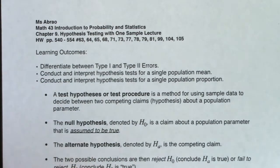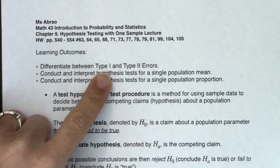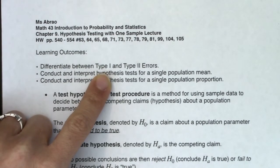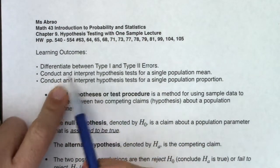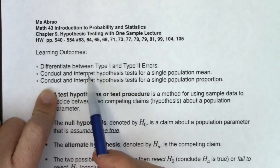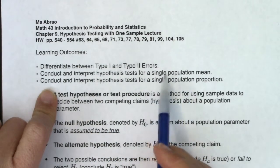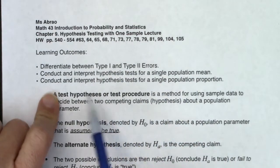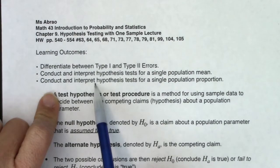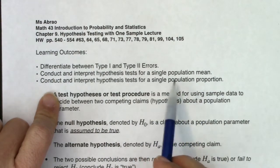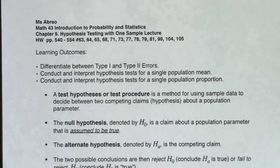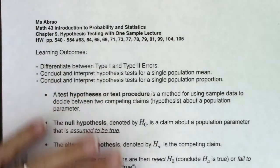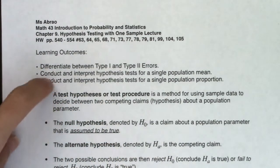So by the time you're done with this chapter, we should be able to differentiate between a type 1 and type 2 error — that's the first concept we'll look at. Then we're going to run a hypothesis test and conduct and interpret hypothesis tests for a single population mean, and also conduct and interpret hypothesis tests for a single sample population proportion. But before we get into the nitty gritty, we need to define what on earth a hypothesis test is — what is a null, what is an alternate — and we'll practice more of the theory first.